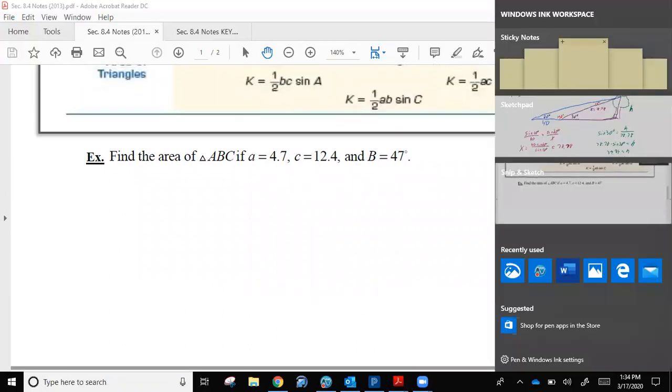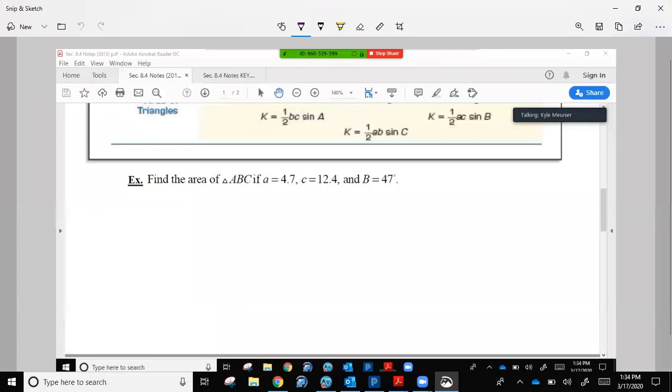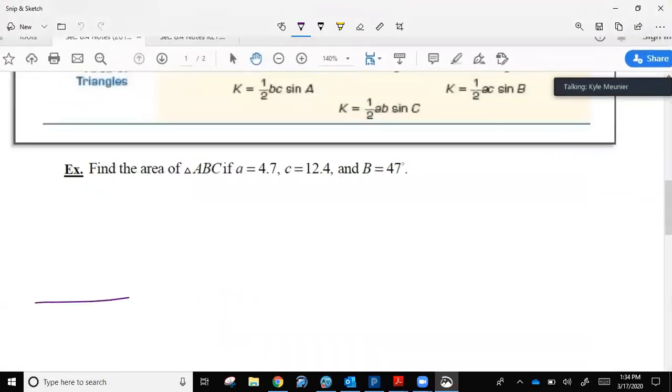So real quickly, how can we find the area of triangle ABC? If I get a picture going here, ABC, side A, side B, side C, we know angle B is 47 degrees. We know side A is 4.7. We know side C is 12.4. Those three things are all I need to find the area of this triangle. I don't need the height anymore. I don't need one-half base times height.